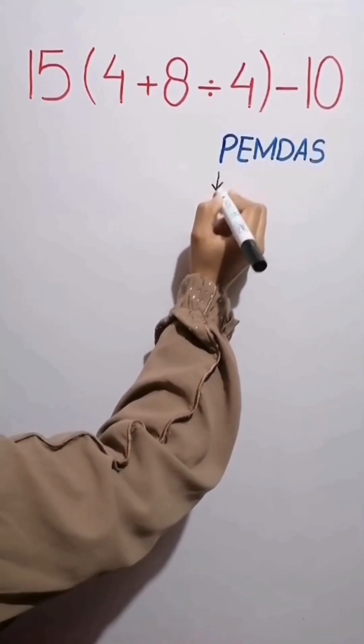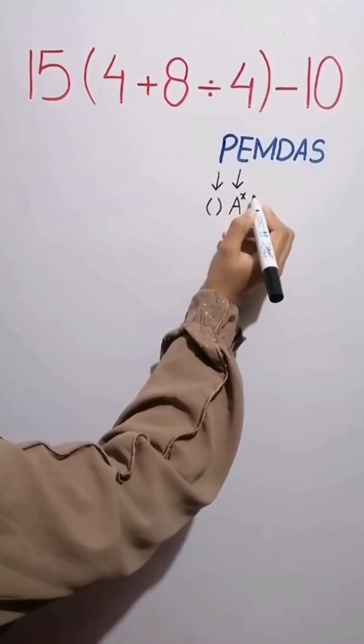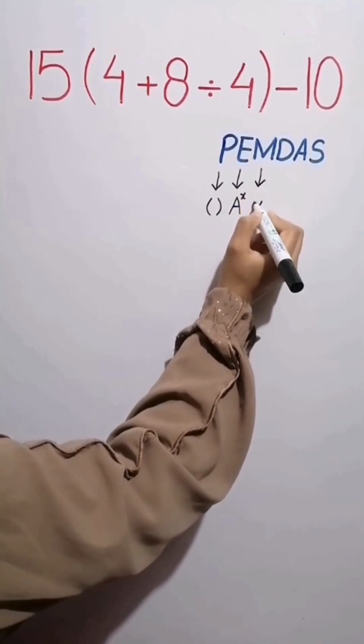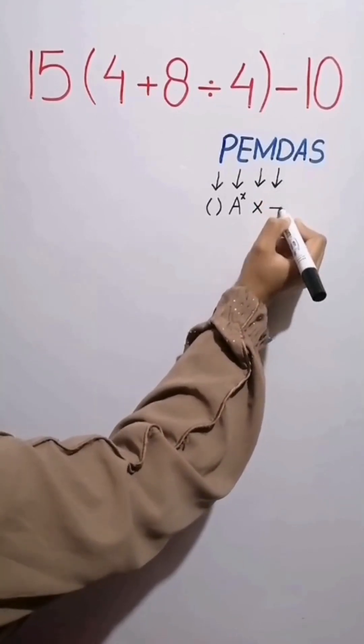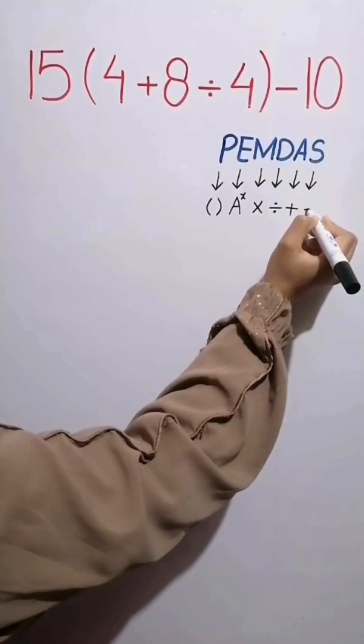In this rule, P stands for parentheses, E stands for exponent, M stands for multiplication, D stands for division, A stands for addition, and S stands for subtraction.